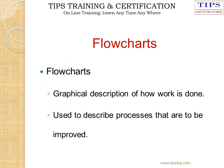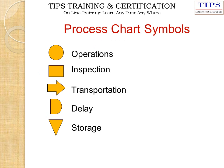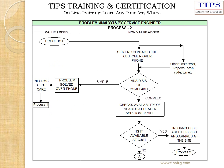Next is the Flow Chart — a graphical description of how work is done, used to describe the process steps. Certain symbols are used for drawing the process chart: Operation, Inspection, Transportation, Delay, and Storage. Using these symbols you draw the process flow chart in detail. An example is given where Value Added and Non-Value Added activities are identified.